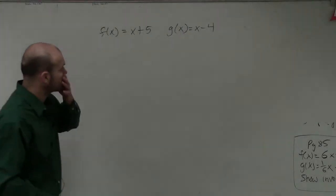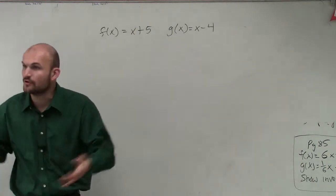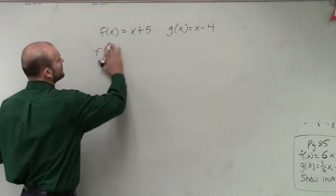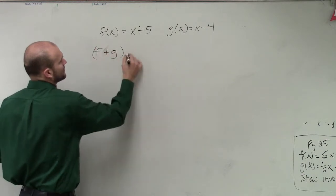So what we have here is f of x equals x plus 5, and g of x equals x minus 4. So on your homework quiz, the first question that I asked you guys to do was f plus g of x.